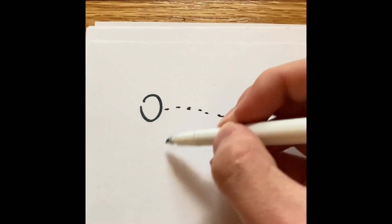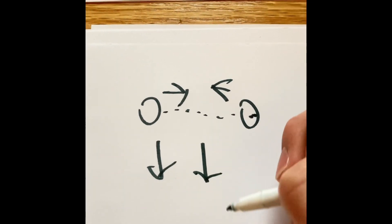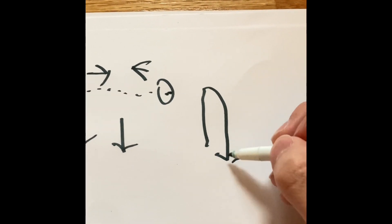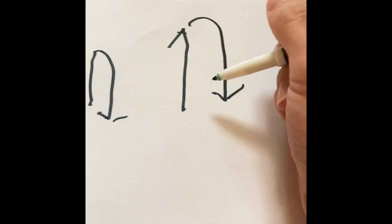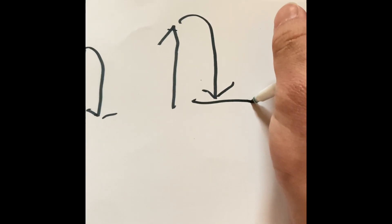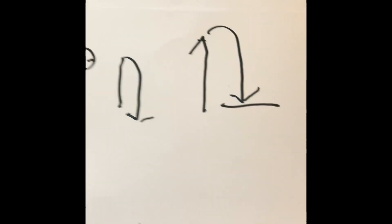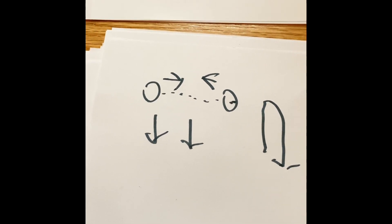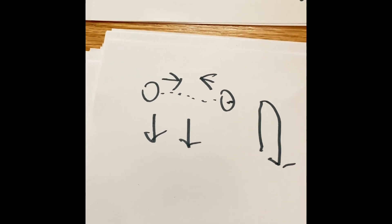Gravity is a force trying to pull things together or pull you down. When you jump up in the air and come back down, that's gravity — Earth is trying to pull you back down. What goes up must come down. But that applies on Earth and other planets when you're on the surface. We're talking about outer space here. Newton made a formula to help us understand gravity and force. This is called Newton's Universal Law of Gravitation.